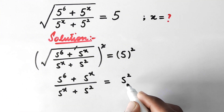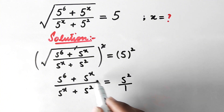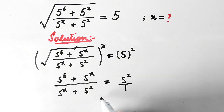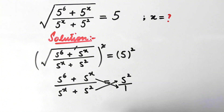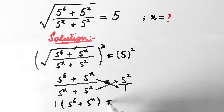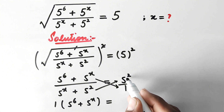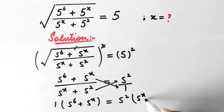We will take the denominator over so that we can cross multiply both sides. By cross multiplying, we get 1 times (5 to power 6 plus 5 to power x) is equal to 5 square times (5 to power x plus 5 square).